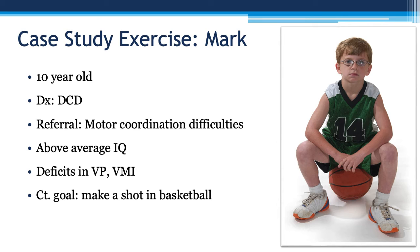Case study: Mark is 10 years old with developmental coordination disorder. He was referred to OT for motor coordination difficulties, above average IQ, and deficits in visual perception (VP) and visual motor integration (VMI). His goal is to make a shot in basketball. Mark reports that he feels left out of playing basketball with his friends at recess because he has difficulties making a basket. He's very self-aware, and this can be difficult — the child can want to stop trying because they never get success. Mark tells you he really wants to be able to make a shot just like his friends do.